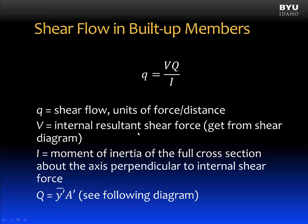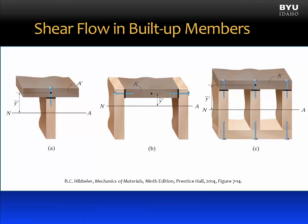V is the internal resultant shear force, which we can get from the shear diagram. I is the moment of inertia of the full cross section about the axis perpendicular to the internal shear force. Q is equal to y-bar-prime times A-prime, and it is determined in a similar manner to what we discussed in the shear formula lesson.